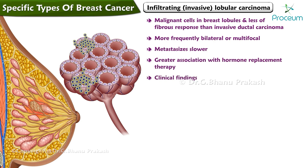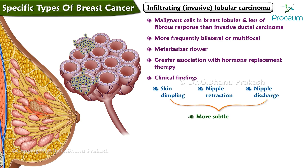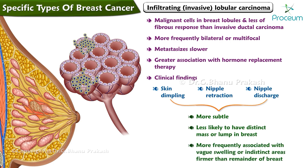Clinical findings of infiltrating lobular carcinoma include skin dimpling, nipple retraction, and nipple discharge; however, these findings may be more subtle than in ductal carcinoma. These patients are less likely to have a distinct mass or lump and more frequently present with vague swelling or indistinct areas that are firmer than the remainder of the breast.